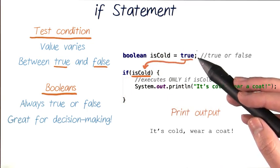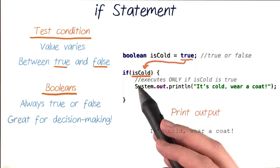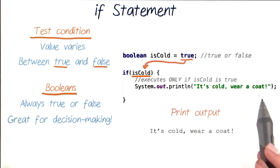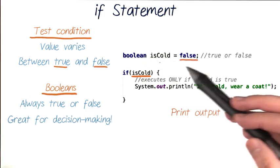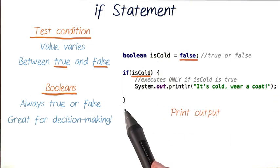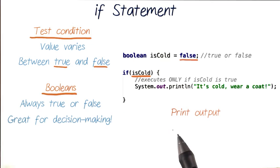So let's say the value of isCold is true. Then our test condition will be true and we'll enter our if statement block of code. And then our print output will be it's cold, wear a coat. But if isCold is false, our test condition won't be true and we'll skip over this block of code. And nothing will be printed out.